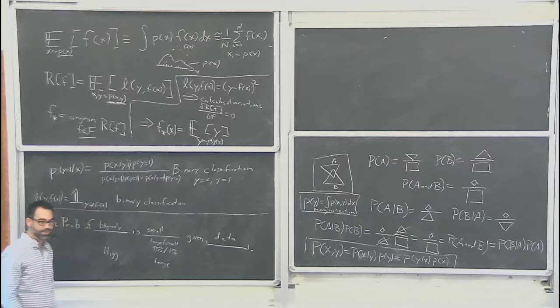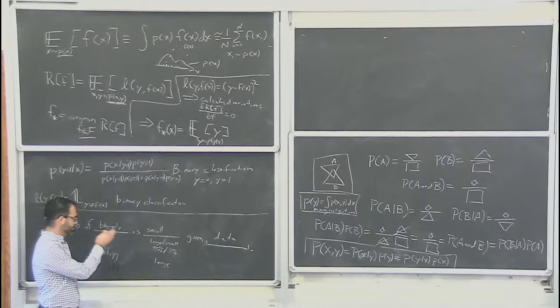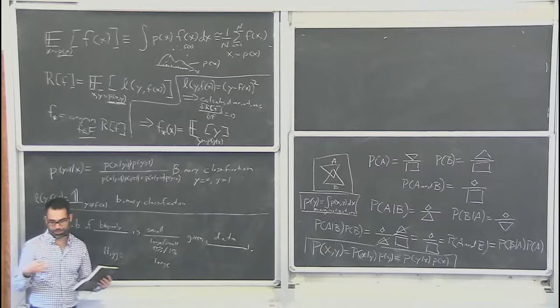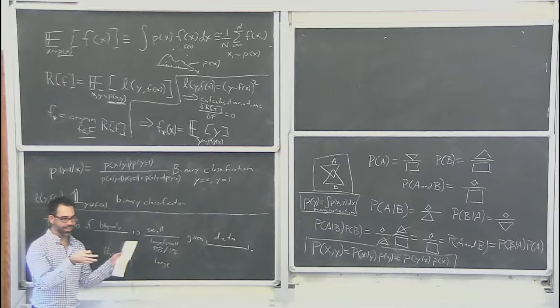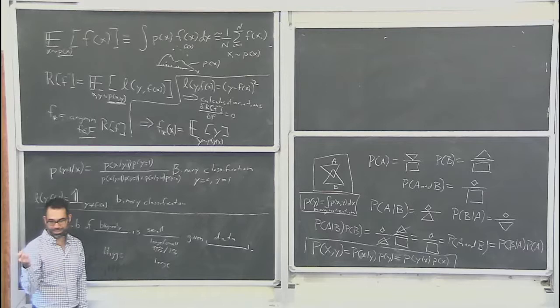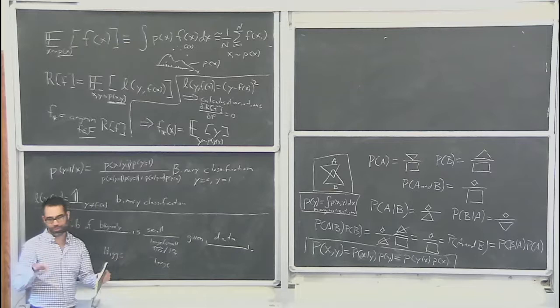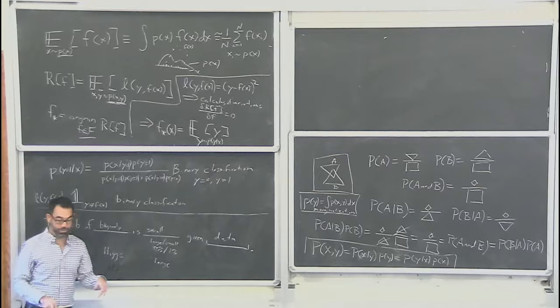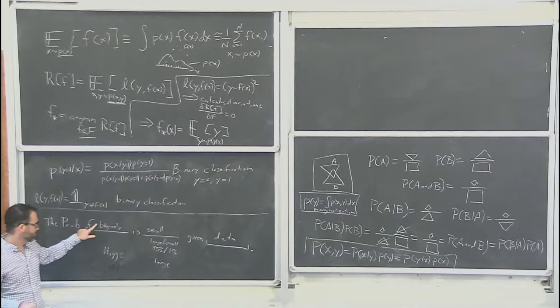The other version: the probability of the Higgs given the data is large. But there's a philosophical question about whether these are equivalent when you treat the two options symmetrically. The probability that the Higgs doesn't exist is just one minus the probability that it does. People worry about whether to say 'this one is small' or 'this one is big,' but that's not what I want to focus on right now.